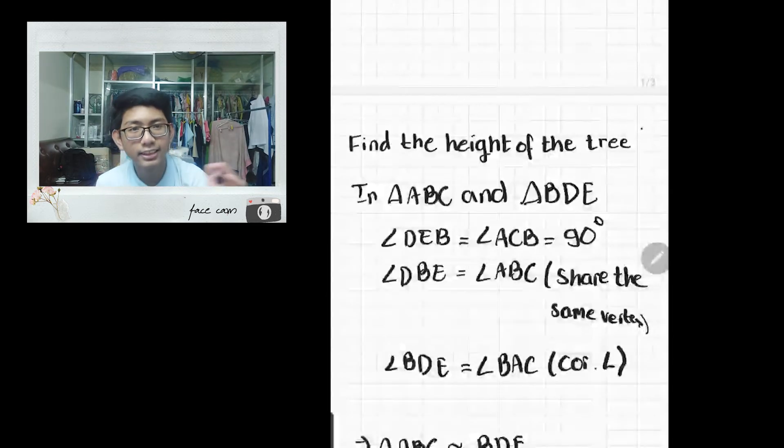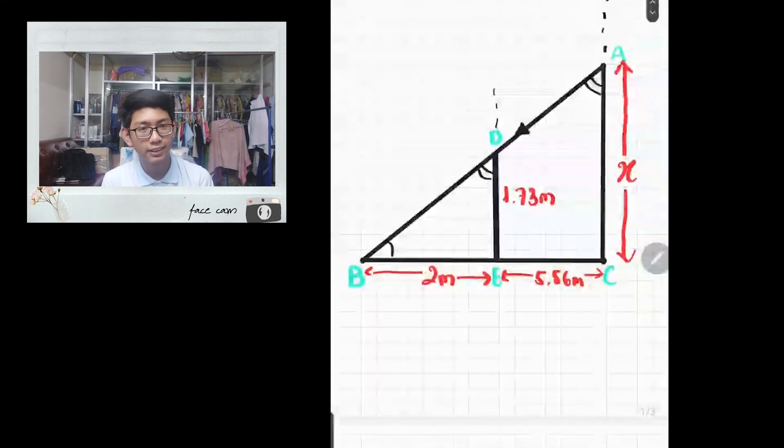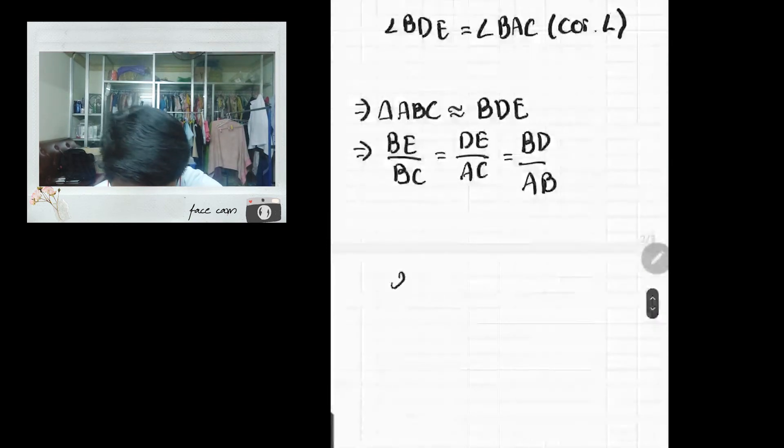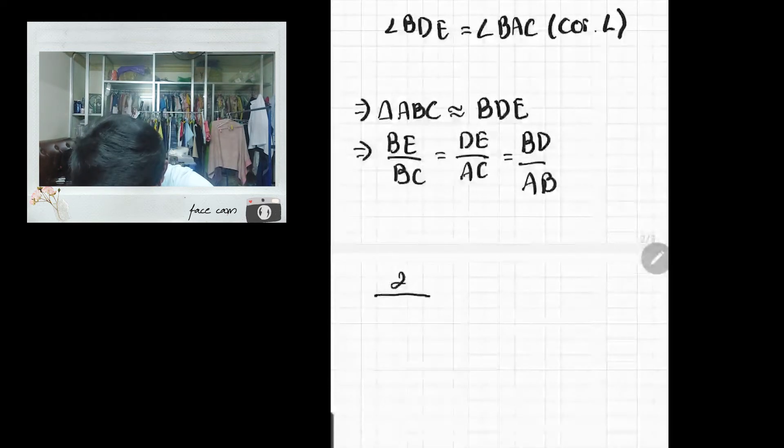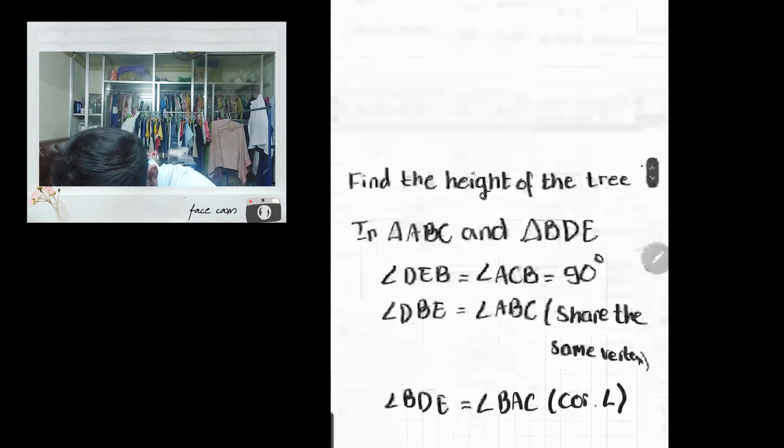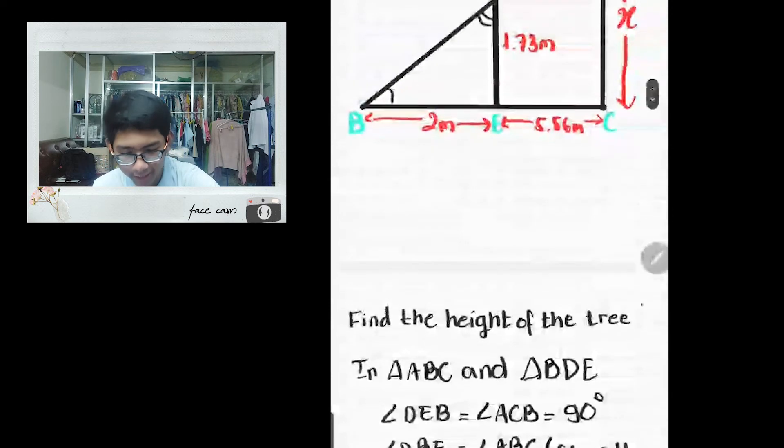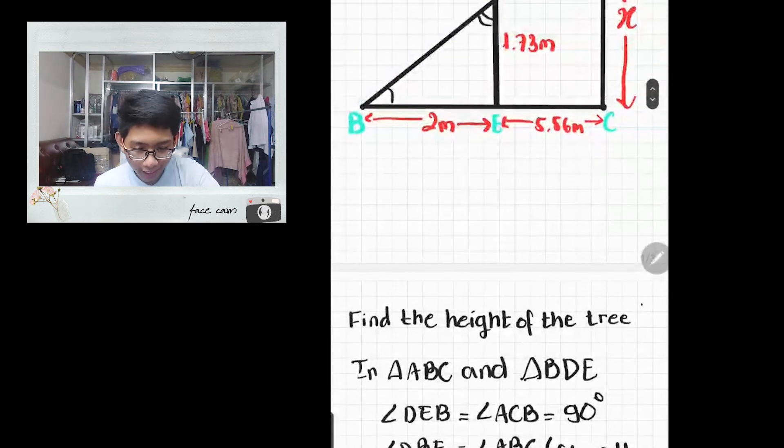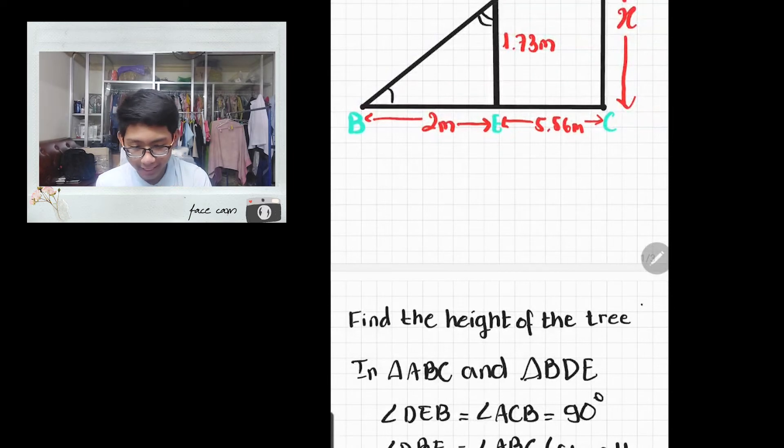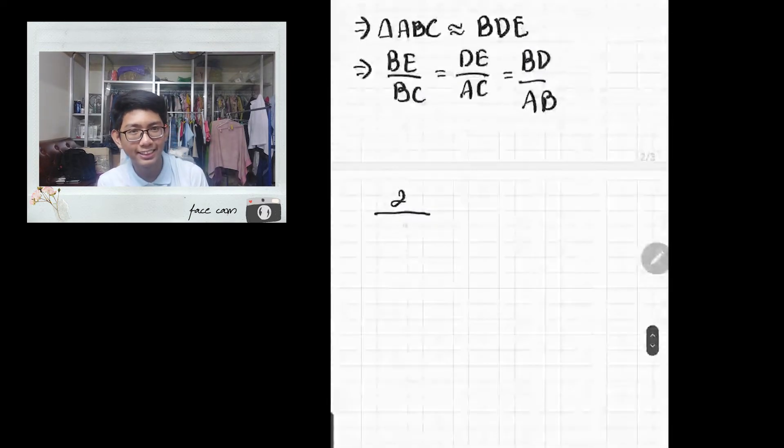Now let's plug in the value of each of these sides. It's important to note that BC is made up of BE plus EC.